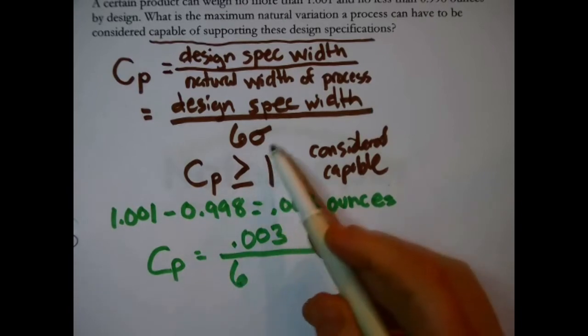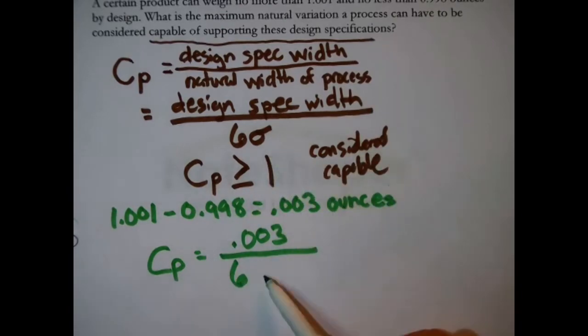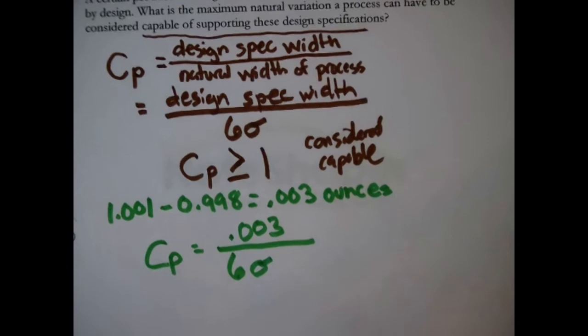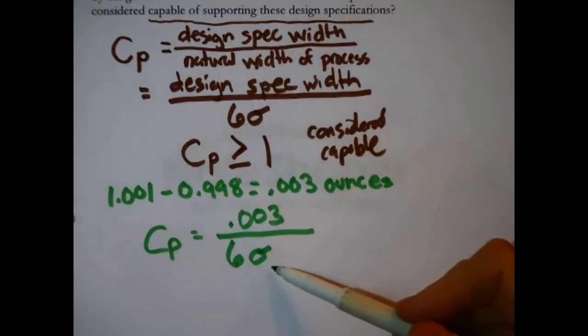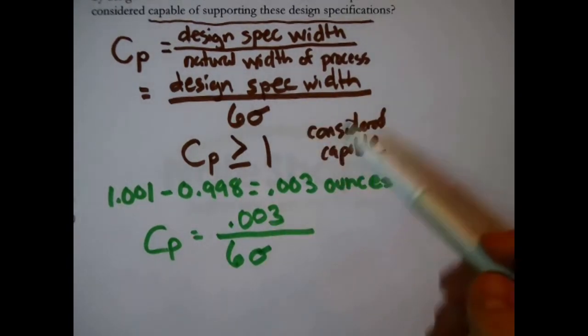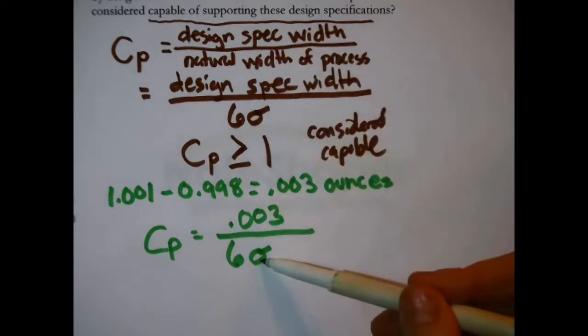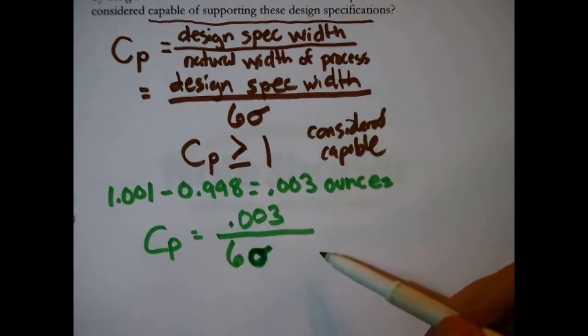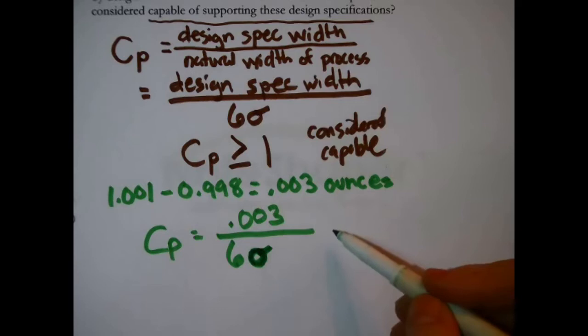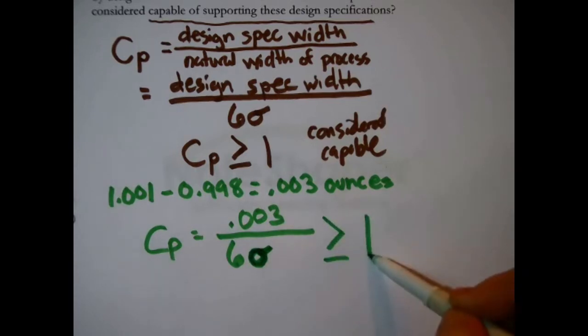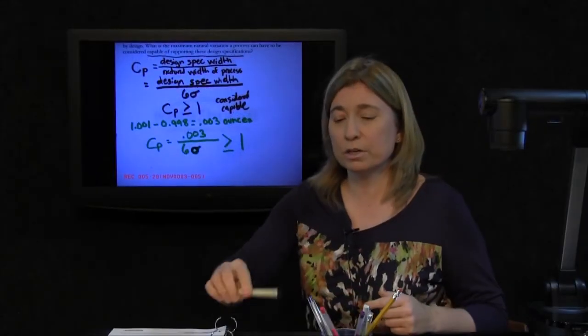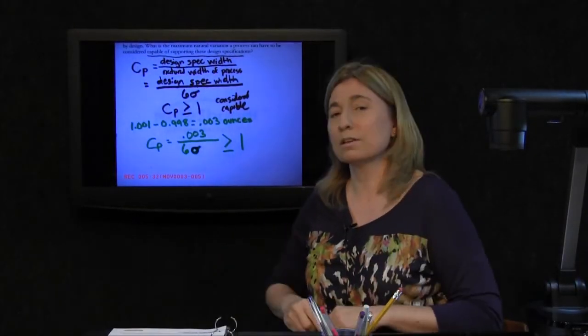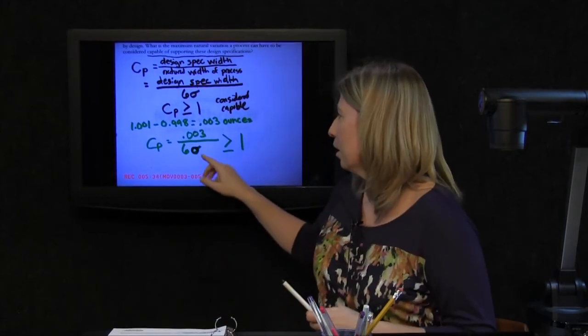In the denominator, it would be six times the standard deviation in the process, but we don't have any particular process, any information on the standard deviation. But we're asking ourselves what's the maximum natural variation and that's what the standard deviation in the process represents such that the process would be considered capable, meaning that this result would be greater than or equal to 1. Now this I can do because now I only have one unknown and the one unknown is the one thing that the question is asking about.